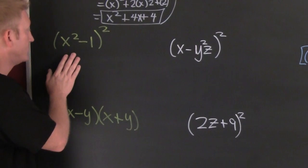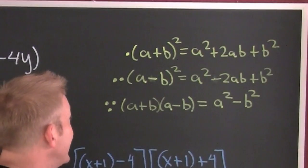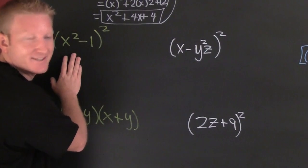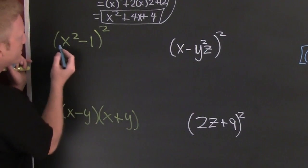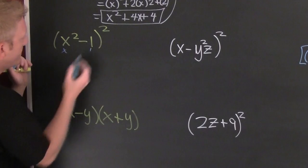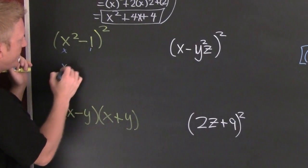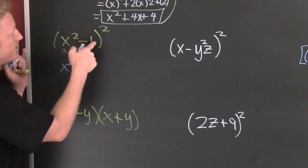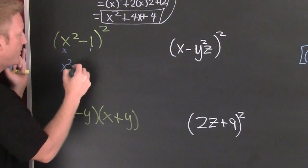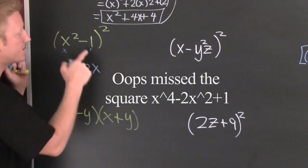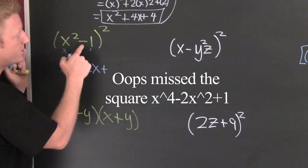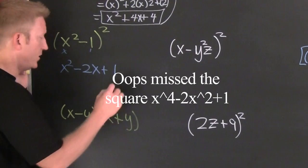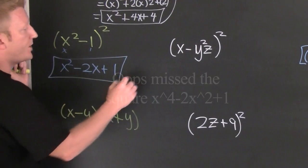Let's take a look at this one. It does appear that we have a perfect square. So this is x and this is 1. Every single time it's this one squared. Then I take this one times that one and double it — minus 2x — plus this one squared, which is 1.